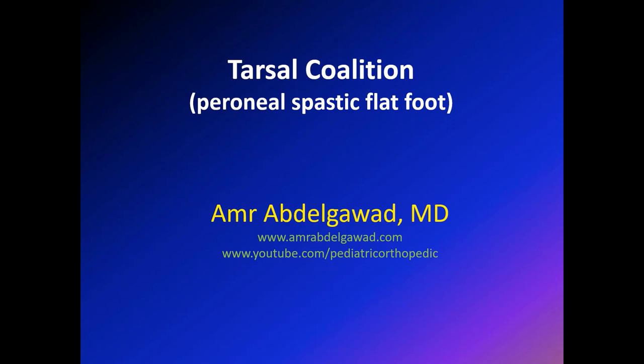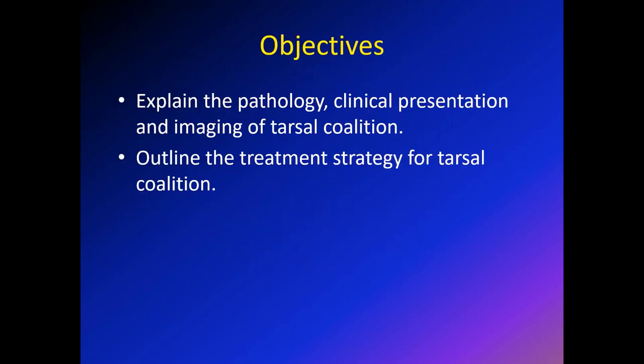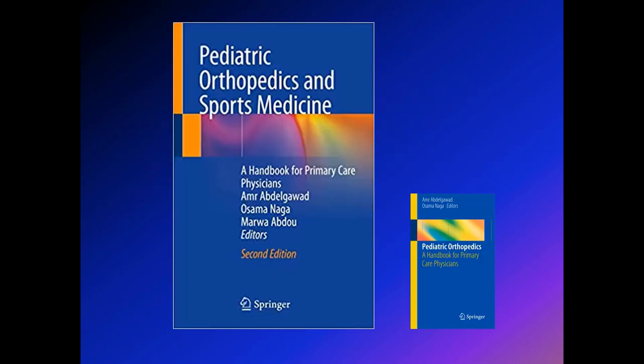This lecture is about tarsal coalition, or what we used to refer to in the past as peroneal spastic flat foot. The objectives of the lecture are to speak about the pathology, clinical presentation, and the imaging of tarsal coalition, and then the treatment outlines. A good source you can use is the book Pediatric Orthopedic and Sport Medicine: A Handbook for Primary Care Physician.